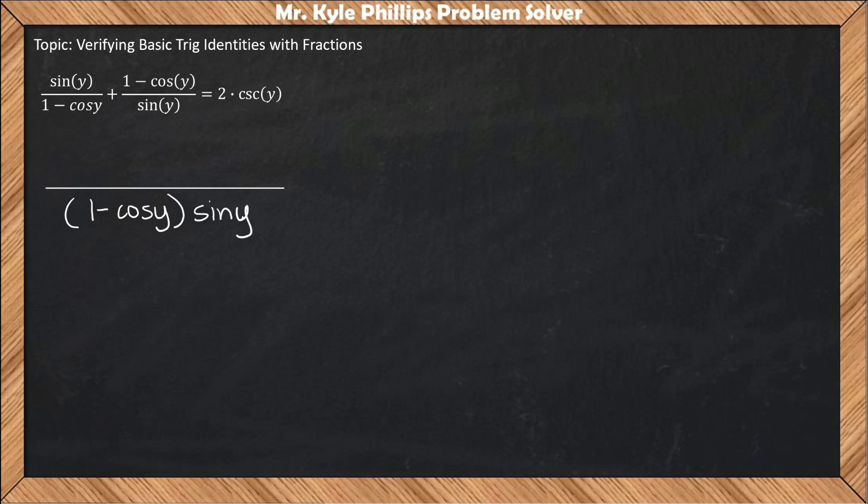The issue now is condensing and reducing our numerator. We can use a trick called cross multiplication. When you do this, make sure you're starting in the top left with sine y and multiplying down to the bottom right. Sine y times sine y gives sine squared y.